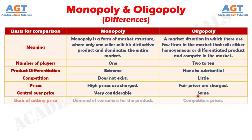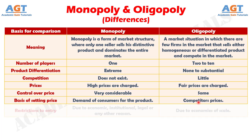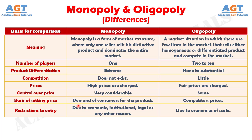No. 7: In Monopoly, the basis of setting price is demand of consumers for the product, whereas in Oligopoly, the basis of setting price is competitors' prices. No. 8: The reasons for restriction on entry in the Monopoly market can be legal, economic, or institutional, but the major barrier in Oligopoly is economies of scale.